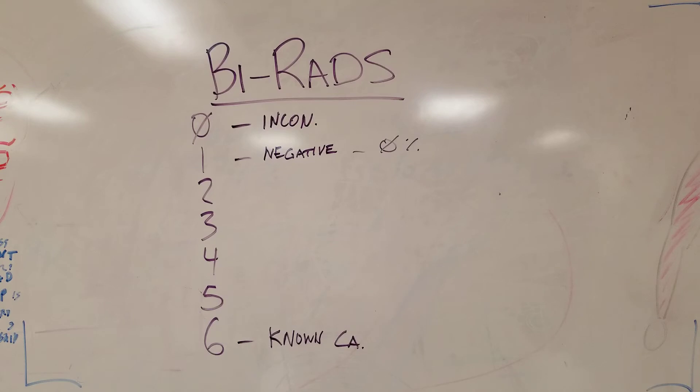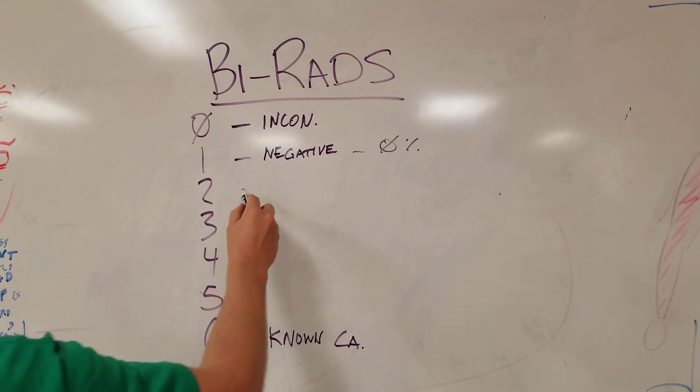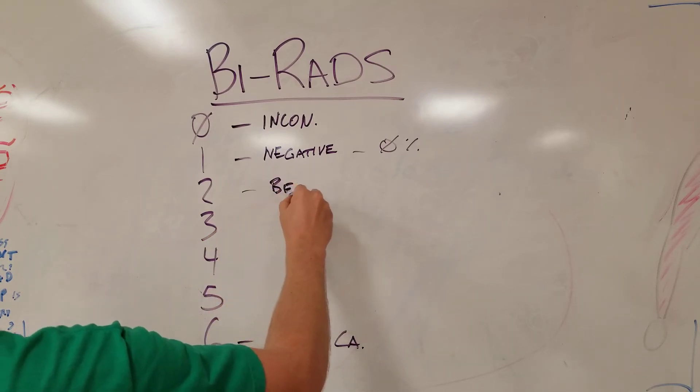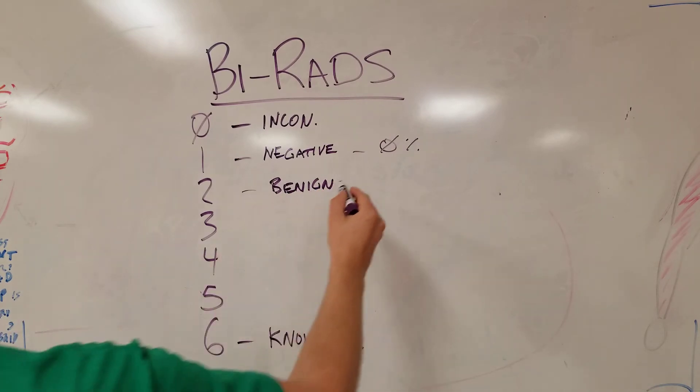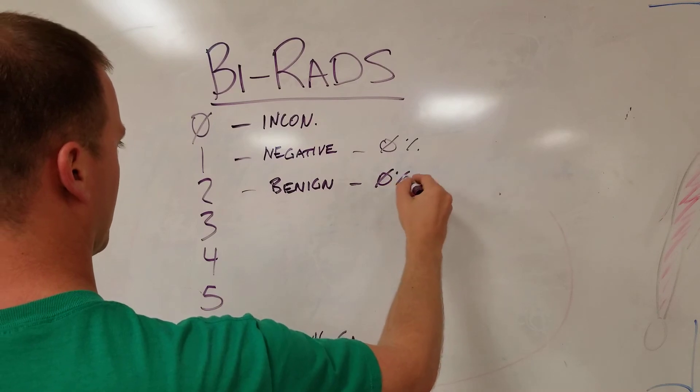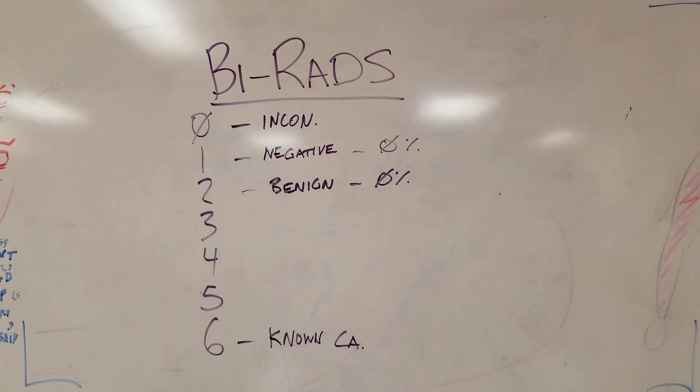Number two is benign, and this is what you're going to see a lot of in mammography studies. Benign studies will have some sort of fibroadenoma or collection of fat or something like that that makes you think these are normal breasts, but they are benign. This also carries about a zero percent relative risk of harboring some malignancy.